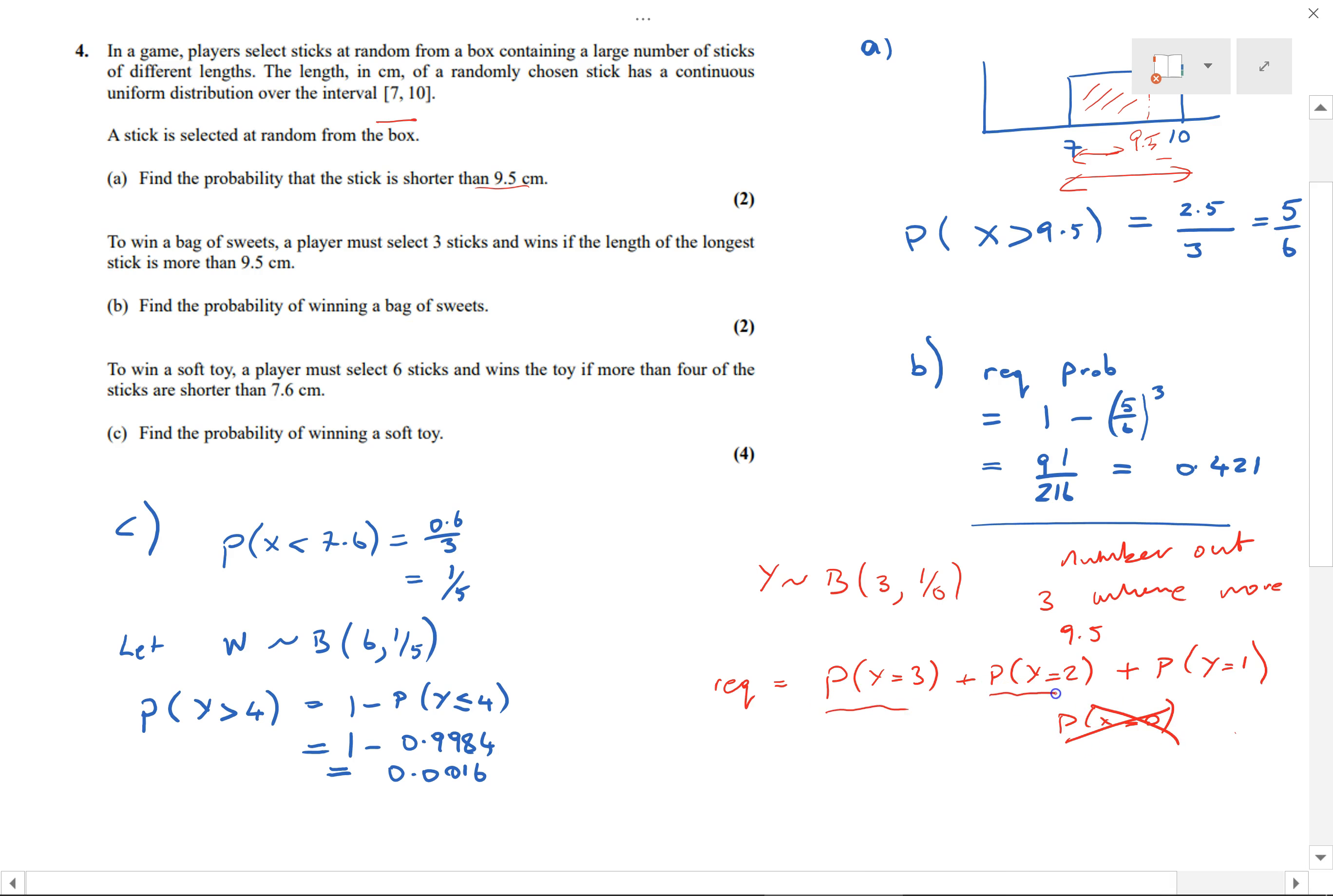So yeah, we could add these three—use the binomial, add these three and get the required probability, put it into the formula. But it would be much quicker to subtract, because one of these four events is going to happen. It would be much quicker to subtract the event that X equals zero. So basically none of them—that would be the probability that none of them are greater than 9.5. It's (5/6)³.